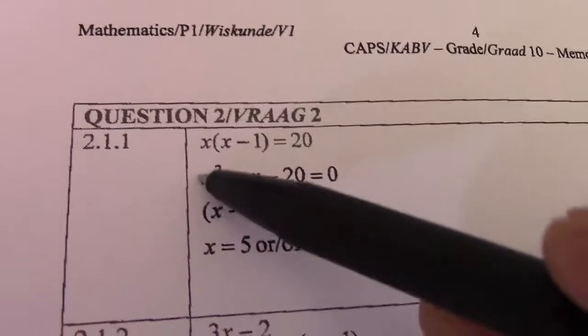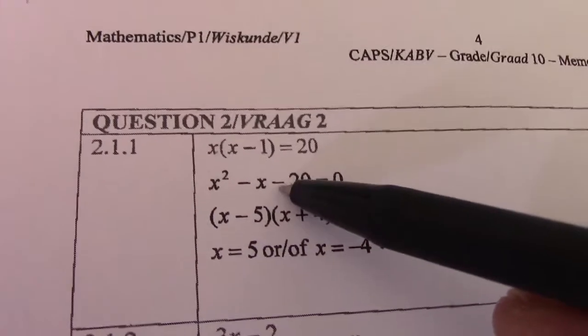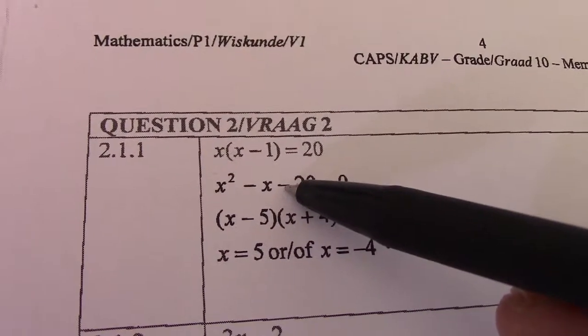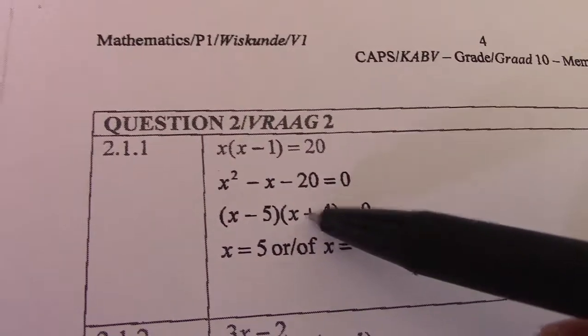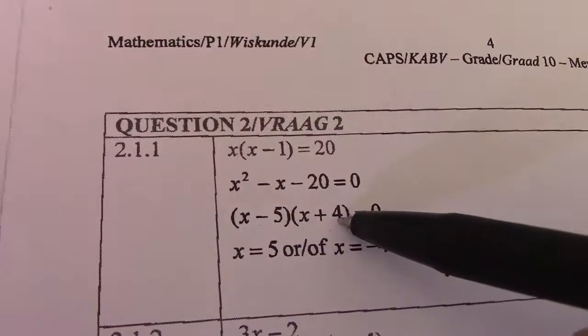x squared's coefficient is 1, so that simply stays x times x to give me x squared. That is negative and there is negative, so if this last term is negative, it's always minus and positive in the brackets. Factors of 20 that add up to 1 are 5 and 4.